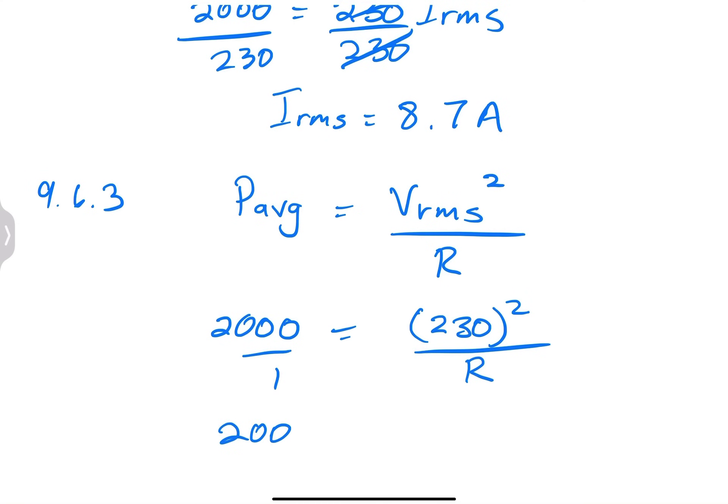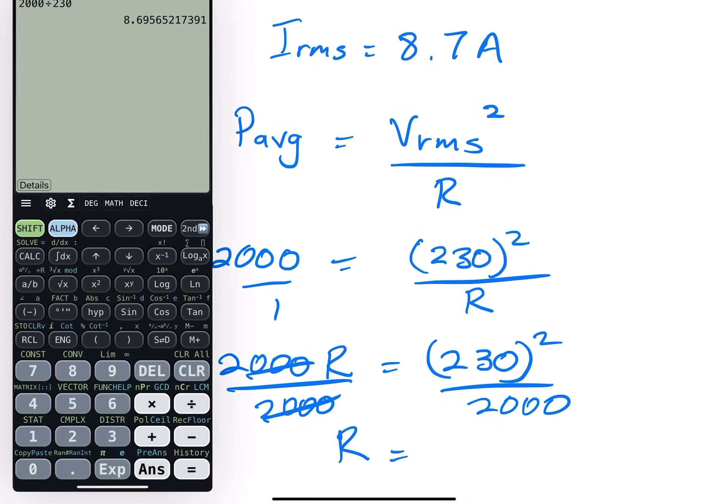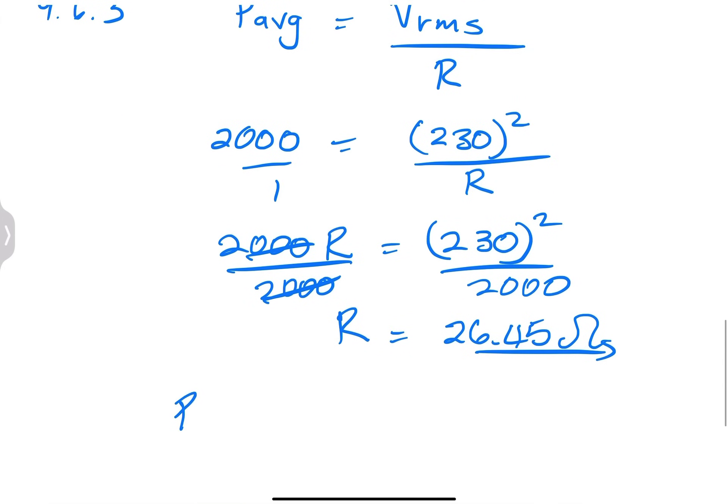So that means you'll have 2000R which is equal to 230 squared. And of course, you can divide by 2000 on both sides to get your value for R. So the resistance, nothing wrong there. 230 squared, I just did something there. 230 squared divided by 2000. And I get a value of 26.45 ohms. That's my resistance.